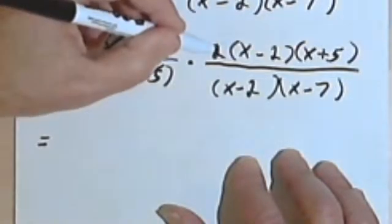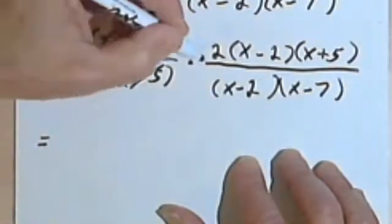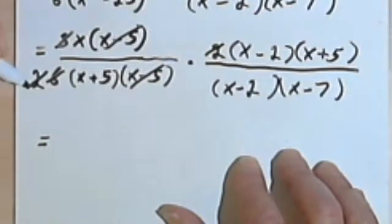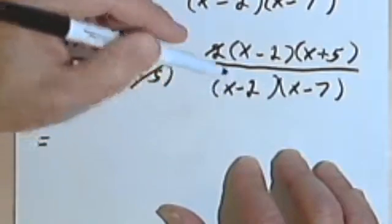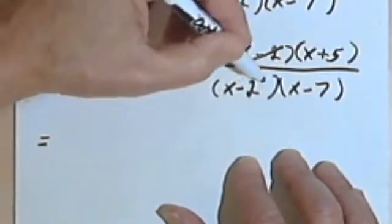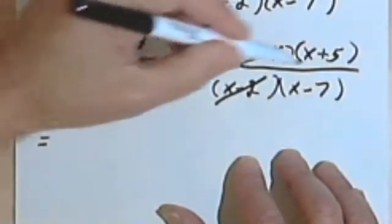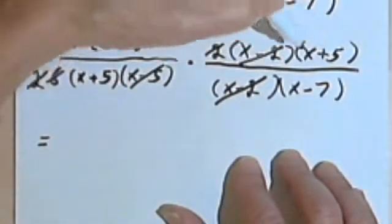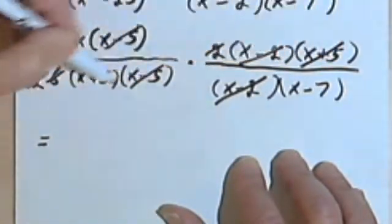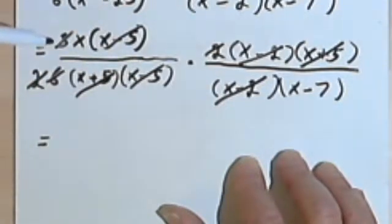I've got a 2, and there's 2 over here. So my 2's are going to cancel. I've got an (x - 2), and an (x - 2). And let's see. I've got an (x + 5), and an (x + 5).